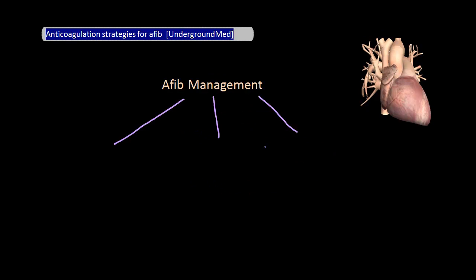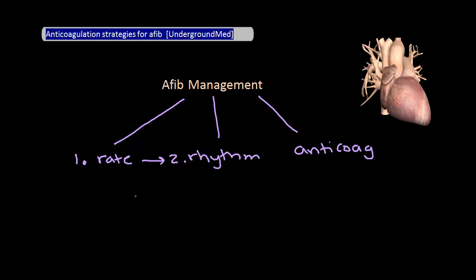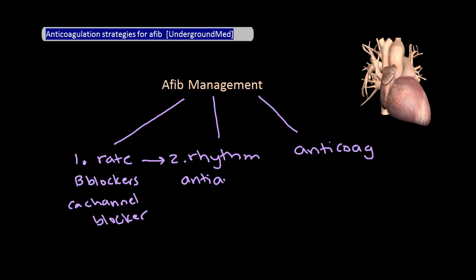You can divide the management of atrial fibrillation into three arms: rate control, rhythm control, and prevention of systemic embolization or anticoagulation. Based on the AFFIRM trial, rate control with chronic anticoagulation is recommended over rhythm control as first-line therapy. This means beta blockers — i.e., atenolol or metoprolol — as well as calcium channel blockers such as diltiazem and verapamil are to be used first before rhythm control, which refers to pharmacological cardioversion or DC cardioversion.